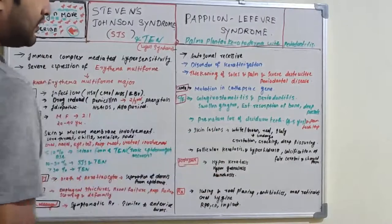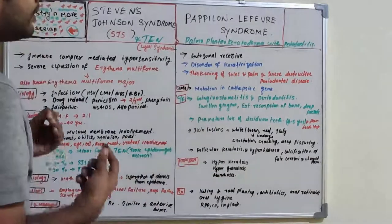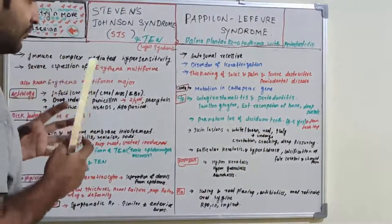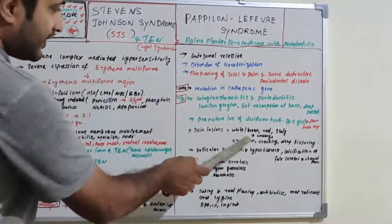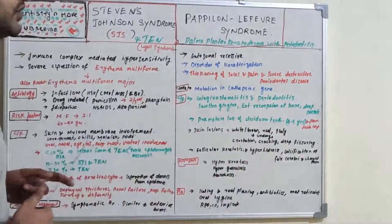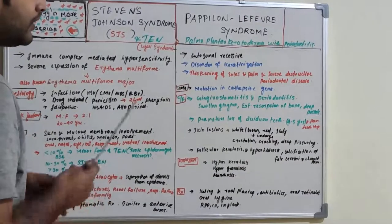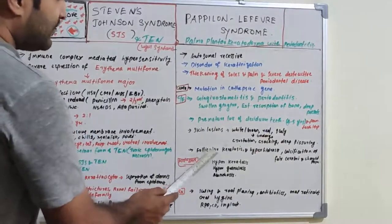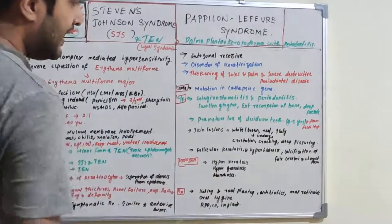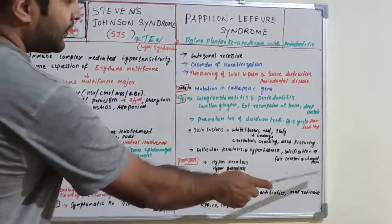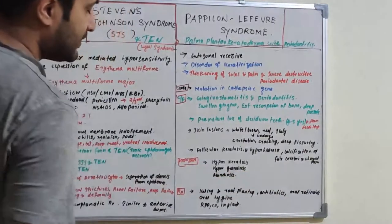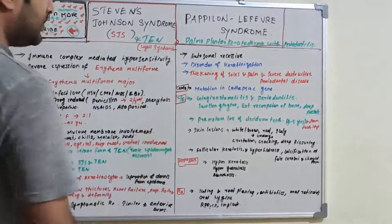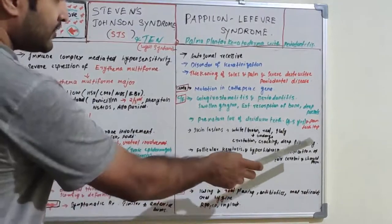Skin lesions are white, brown, red, or scaly in nature, undergoing crustation, cracking, and deep fissuring on the hand and foot regions. Additional features include follicular keratosis, hyperhidrosis, and calcification of the falx cerebri and choroid plexus.